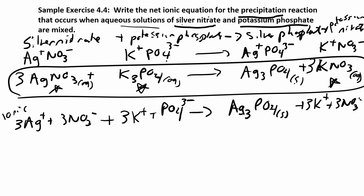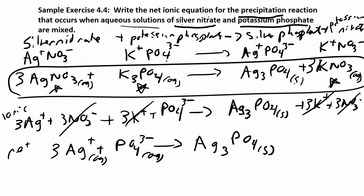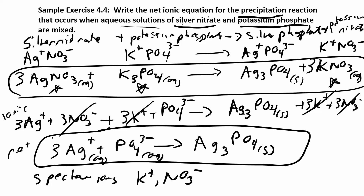Now cancel things that are the same on both sides. I have three nitrates on each side and three potassiums on each side — those cancel. So my net ionic equation is: 3 Ag+ (aqueous) + PO4 3− (aqueous) → Ag3PO4 (solid). The spectator ions are potassium and nitrate. We're going to do this process a lot — next we'll look at it for acids and bases, but this is what it looks like for two ionic compounds.